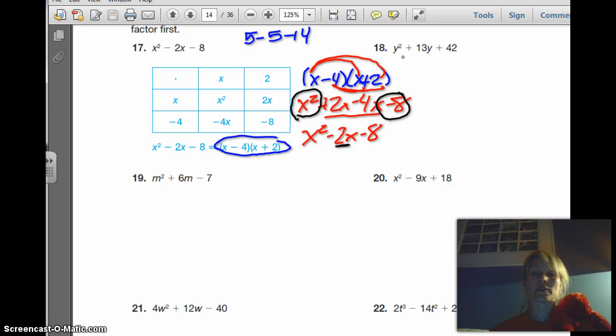So we want to start practicing going from standard form to factored form using these two ideals that the first term is x squared, and the last term is the last two numbers multiplied to this. But then when you add or subtract them, you get the middle term here. So we're going to look at this example here. We have y squared plus 13y plus 42.